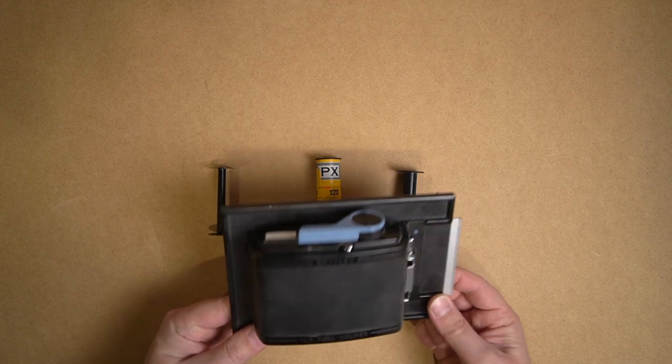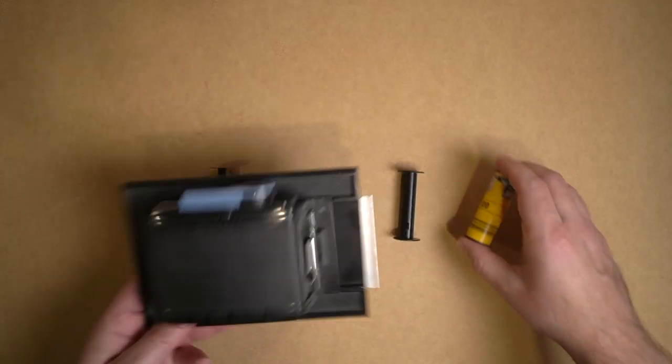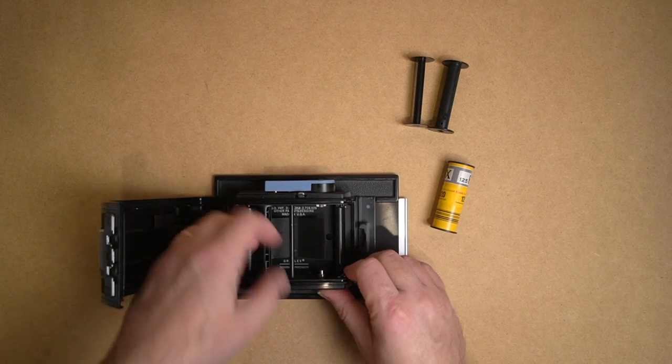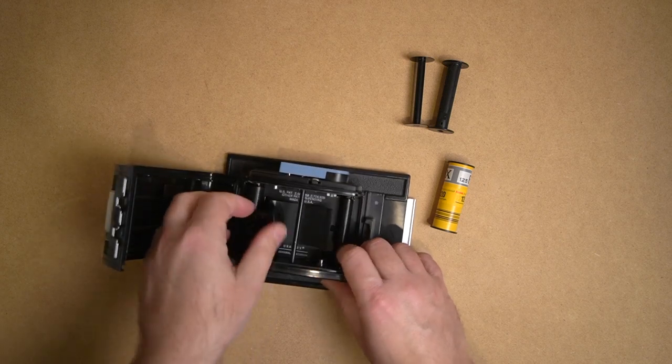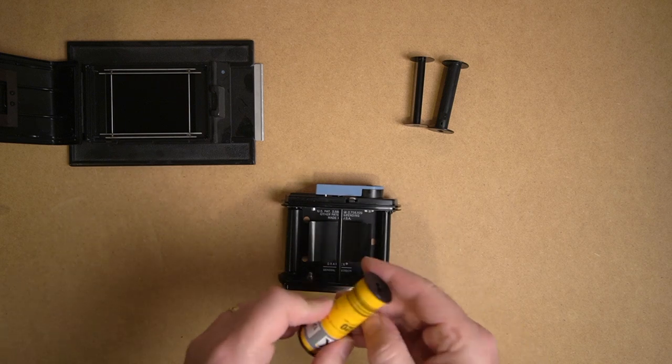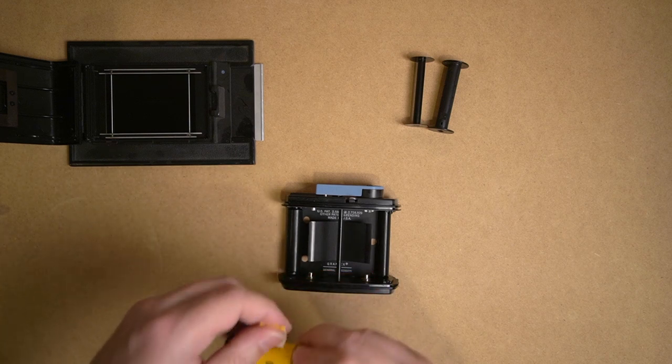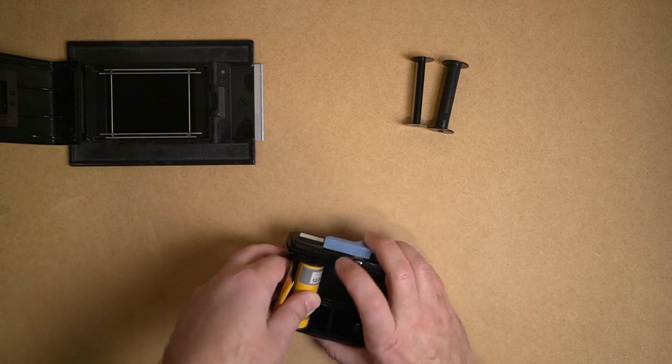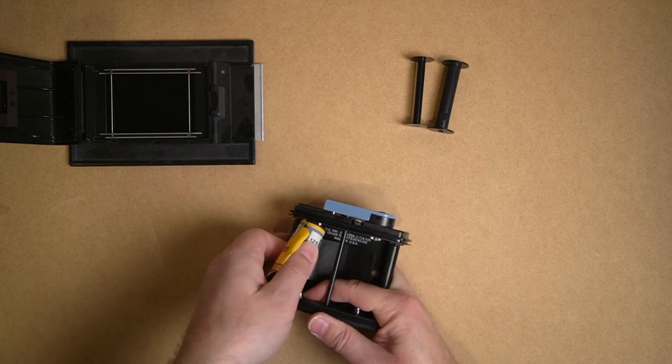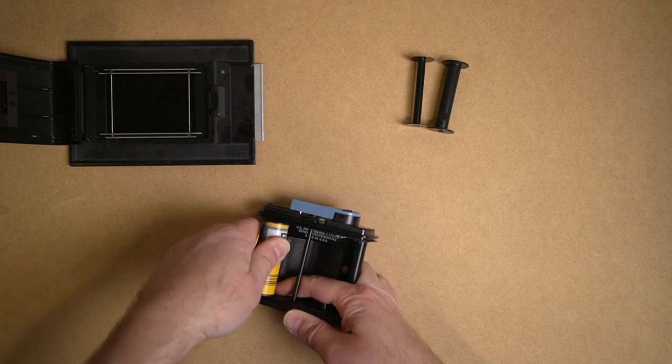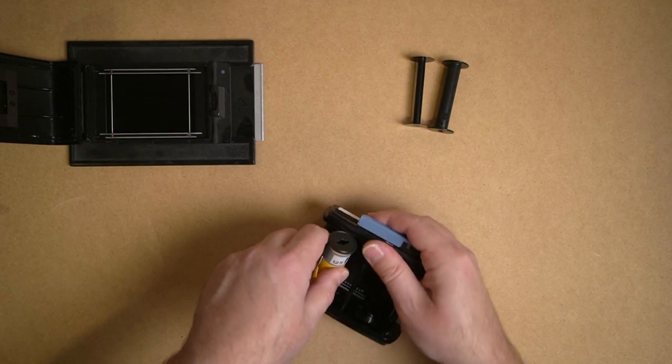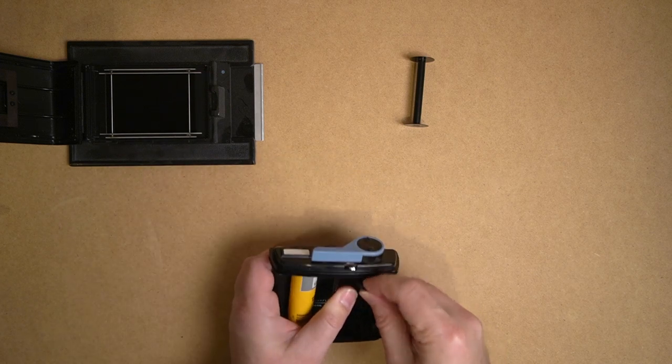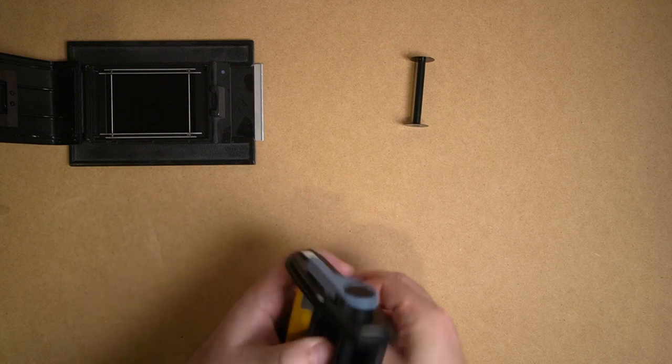So one way we can do this, and probably the easiest way, is using a holder such as this. Now you may not already have one of these, if you do this is handy. What we're going to do is load the film up into a standard 120 film holder. This particular one is to get medium format onto a 4x5 camera. So just follow the directions for this, which I'm gonna make a mess of on camera because clearly I don't do this very often.